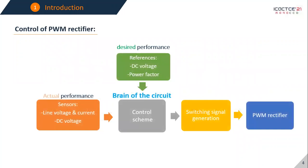Now for the control of PWM rectifiers we must first select our desired performance, measure the actual performance and feed it to the control scheme. The control scheme then determines the most appropriate switching signal and feeds it to the PWM rectifier.